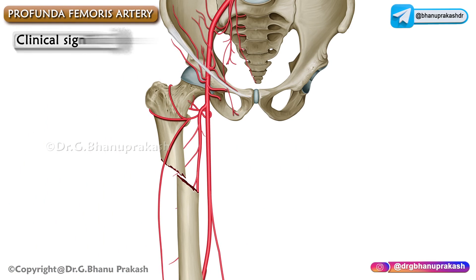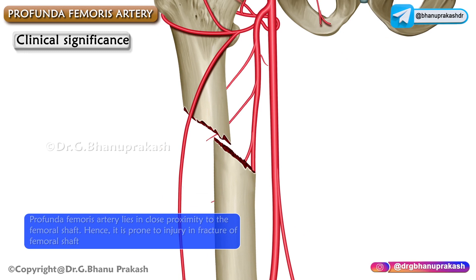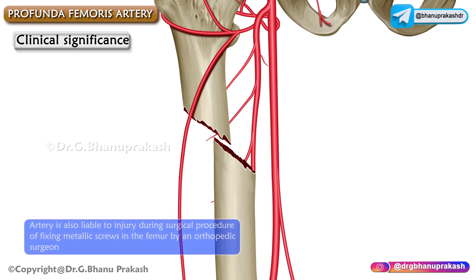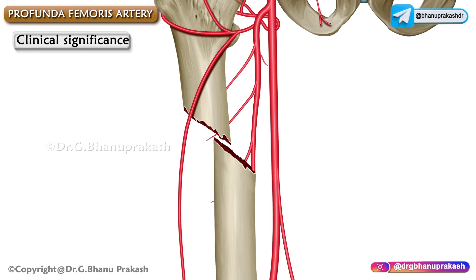The profunda femoris artery is of great clinical importance because it is deeply located and lies in close proximity to the femoral shaft. This makes it prone to injury in fractures of the femoral shaft. The artery is also liable to injury during surgical procedures involving the fixation of metallic screws in the femur by an orthopedic surgeon. This completes the discussion of the profunda femoris artery, its branches, and its clinical applications.